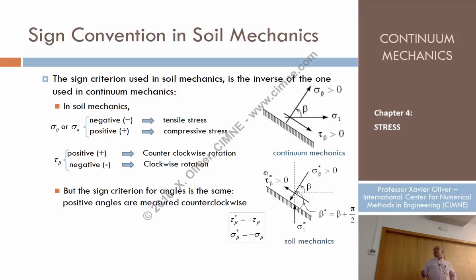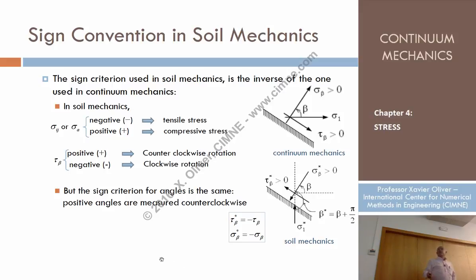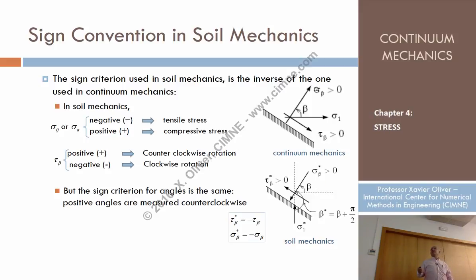And since we changed the sign of the normal stresses, let's also change the sign of the shear stresses. In soil mechanics, tangential stresses are positive if they move counterclockwise, and negative if they move clockwise. Let's denote by a star the stresses using the soil mechanics sign criterion, and no star for the continuum mechanics sign criterion.